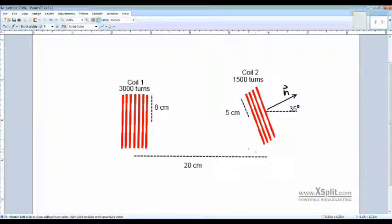All right, so for this problem, this is the setup of the problem here. We've got our two coils 20 centimeters apart from each other with different amounts of turns.